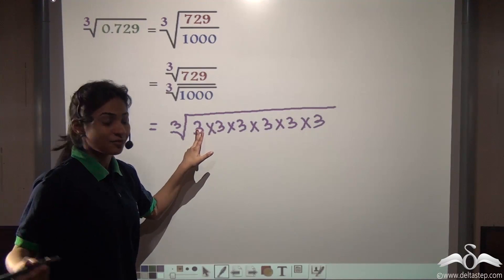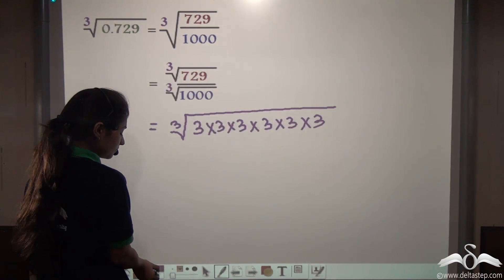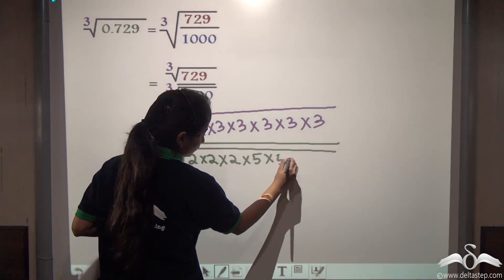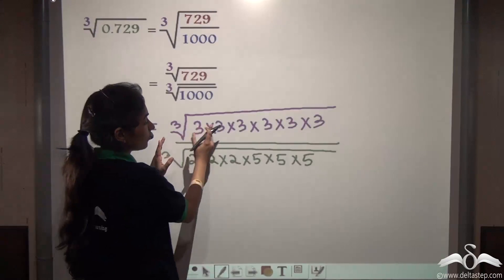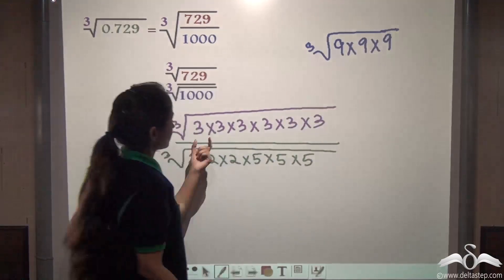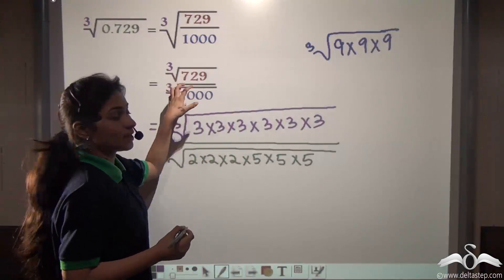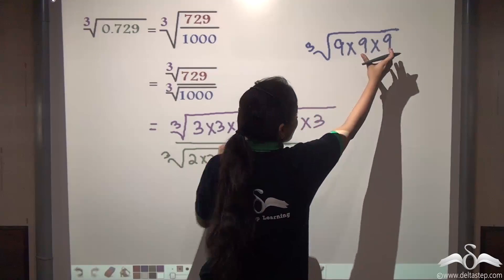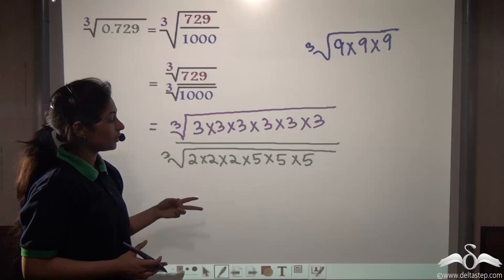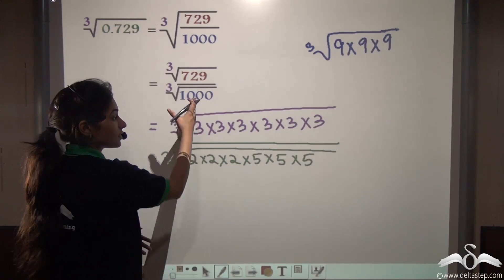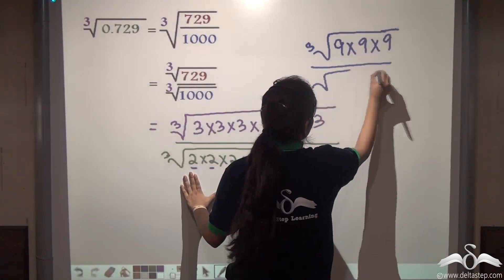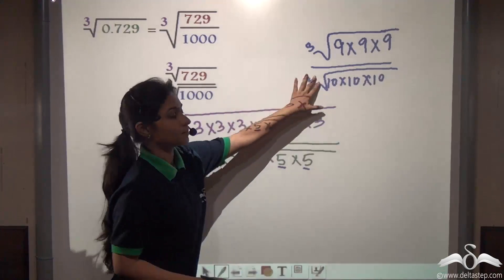When you factorize 729, you get 3 multiplied with itself 6 times. This can be written as groups of three 3s: 3×3×3 multiplied by 3×3×3, which equals 9×9×9 — since 9 multiplied by itself three times gives 729. Similarly, factorizing 1000: 10 into 10 into 10 gives 1000, because 2×5=10, taken three times.